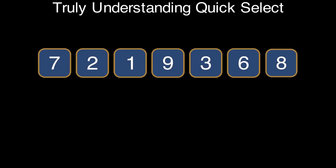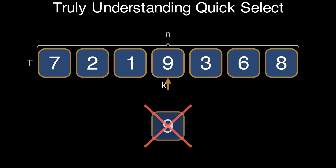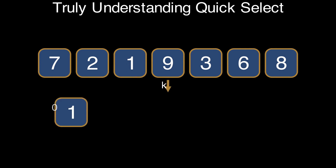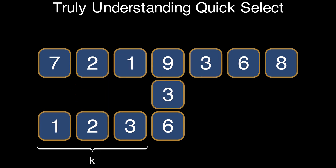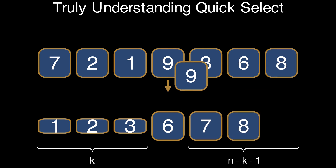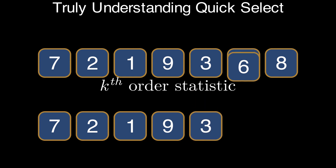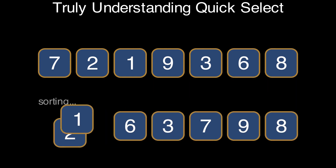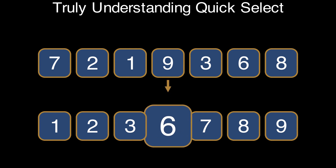QuickSelect is an algorithm that takes as input an array called t of size n, and an index k into the array that ranges from 0 up to n-1, and returns the kth smallest element counting from 0 — that is, an element such that there are k elements smaller than it in the array. The remaining elements must all be larger. A simple way to find the kth smallest element, also called the kth order statistic, is to first sort the array using some sorting algorithm like quicksort or mergesort, and then return the element on position k.